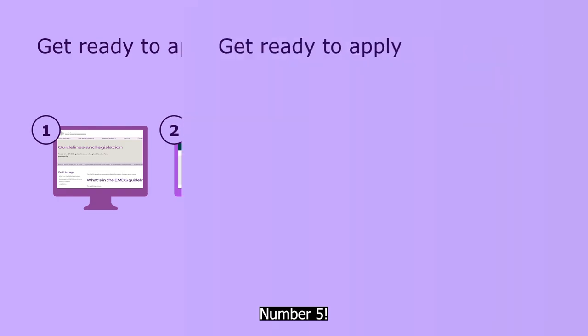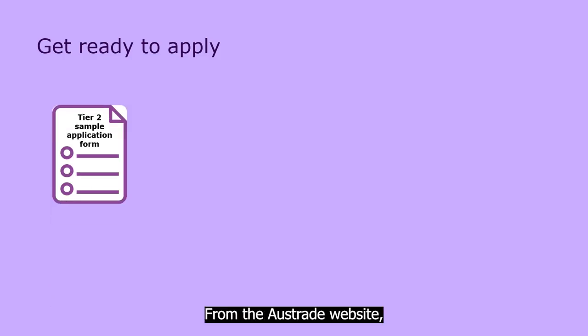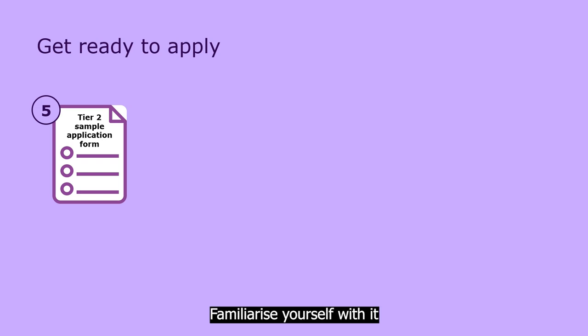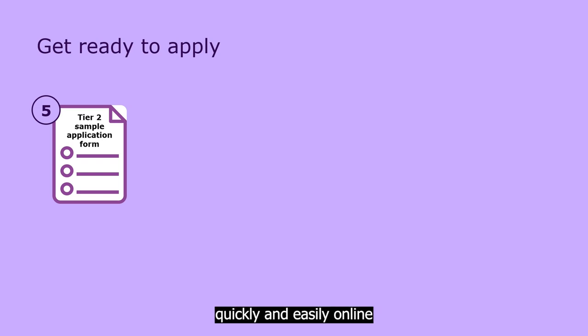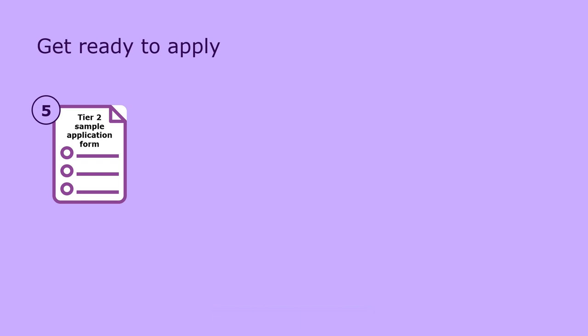Number five, from the Austrade website, download the Tier 2 sample application form. Familiarise yourself with it so you can fill it out quickly and easily online when applications open.